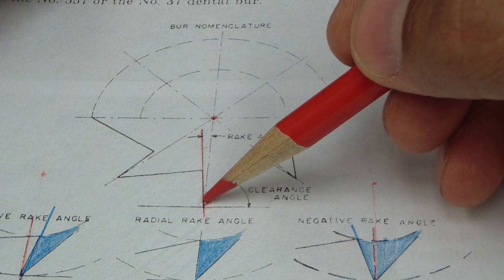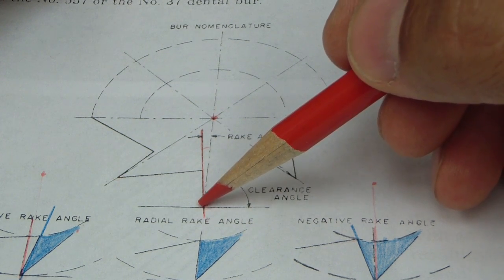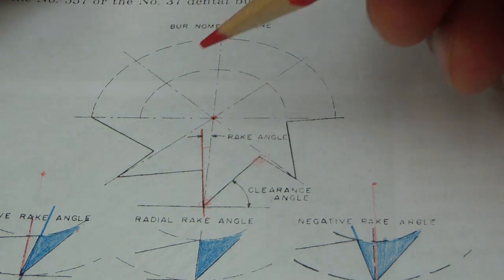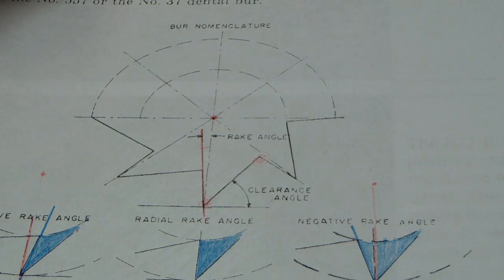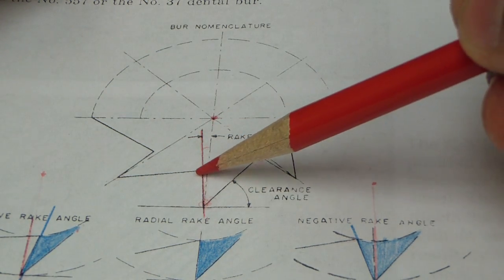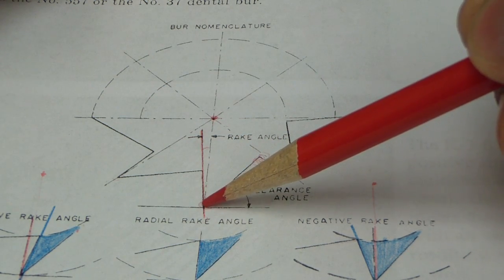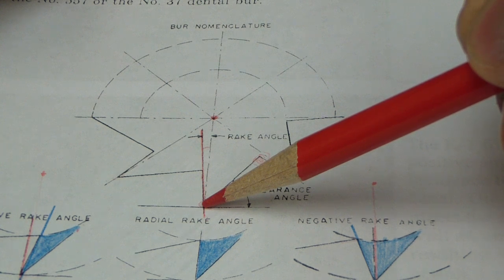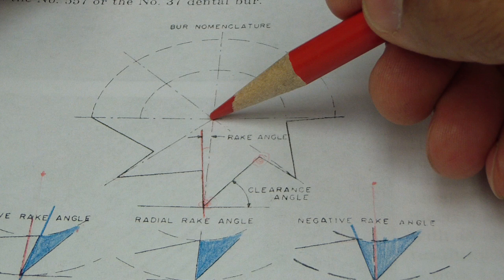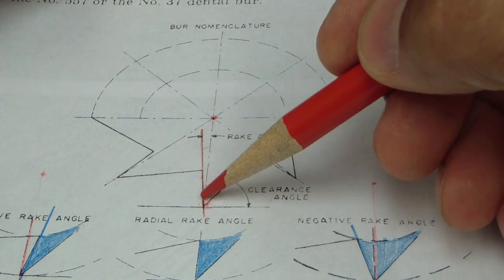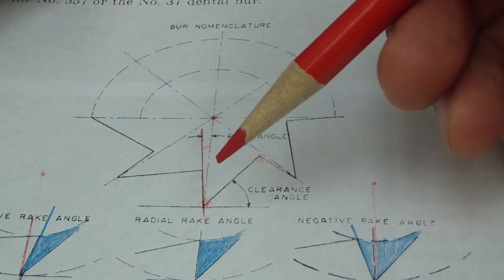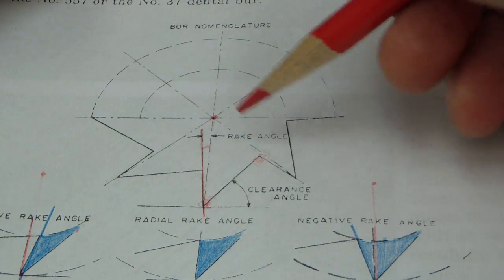So this is the center of the burr and these top pieces are called the teeth that bite into the material and these are the flutes or the valleys. Typically the rake angle is described as the angle formed by the leading edge, so the leading edge of this mountain if you may or peak, and the radius of the burr or endo file. So if this is the radius coming right from the center, this angle right here is called the rake angle. So you can either have a positive, a radial, or a negative rake angle.